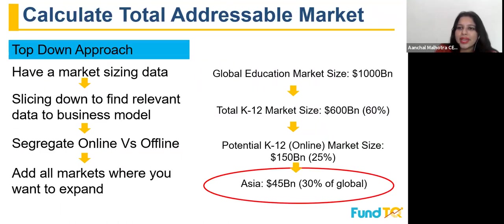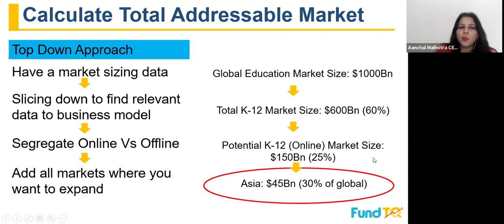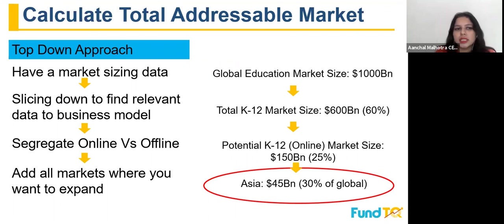There are two ways to calculate the total addressable market. The first is the top-down approach and the other is the bottom-up approach. The top-down approach means you have a product where the market size is defined — you have market sizing data maybe from a research report or some articles. It has to be from a renowned source; that has to be a priority.